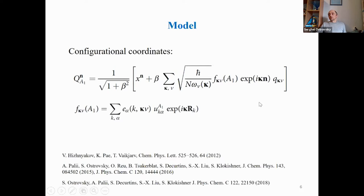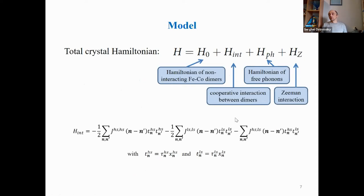Such a representation for a single impurity center in a crystal was first introduced by Professor Hyznikov. For molecular crystals, we use this representation for the description of the spin crossover phenomenon in iron complexes of different nuclearities. The total Hamiltonian of the problem includes the Hamiltonian of non-interacting iron-cobalt dimers, the cooperative interaction between dimers, the Hamiltonian of phonons, and the Zeeman interaction. The cooperative interaction in this approach arises because the ligand surroundings of the metal ions participate both in local vibrations and in vibrations propagating along the crystal — the phonons.